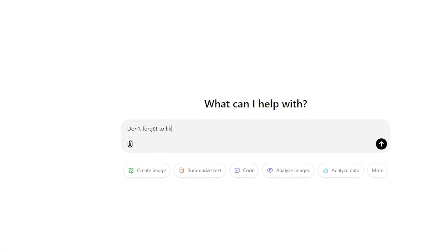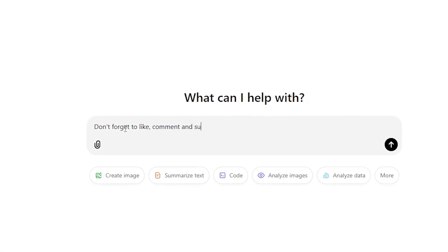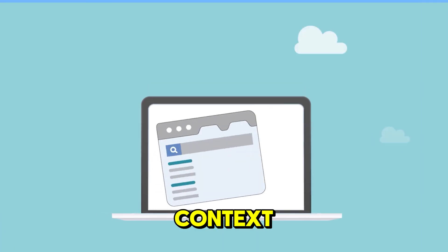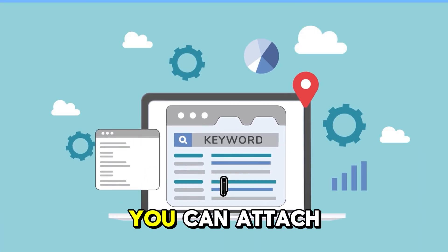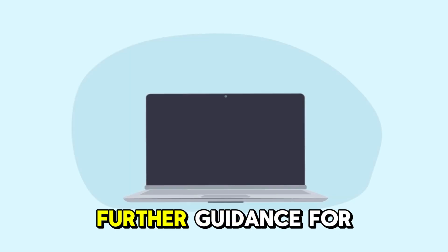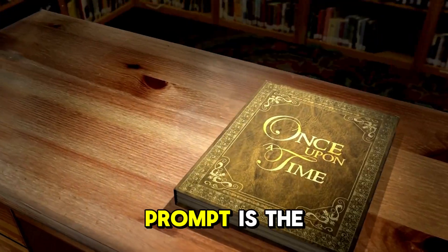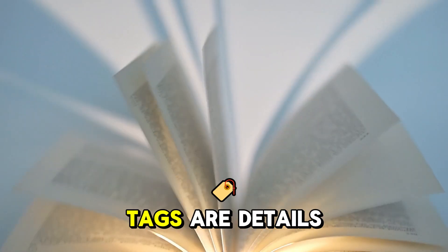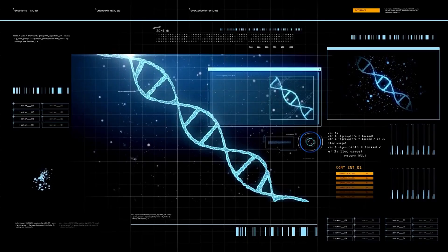A prompt is basically an instruction that you give to an AI system for a specific response. A meta-tag, in this context, is a keyword that you attach to your prompt to provide further guidance for the AI. Think of it like this: the prompt is the story you want the AI to capture, and the meta-tags are details about how the AI should tell that story. You can think of meta-tags as the DNA of your song.